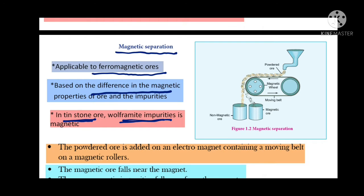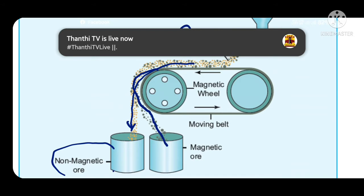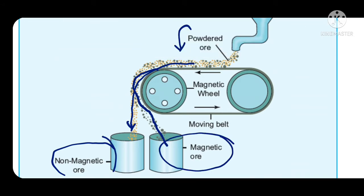Here, powdered ore is allowed to fall on this moving belt. If non-magnetic ore, it will immediately fall. If magnetic ore, it is attracted by the magnetic field, so it goes with the wheel for some time and then falls separately. We will get non-magnetic ore and magnetic ore separately. This method is based on the difference in magnetic property.